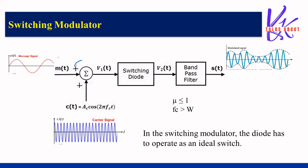This is the block diagram of the switching modulator. We are using a summer to which we are giving the message signal, which is a low frequency signal, and the carrier as the other input. The output of the summer is represented as v1(t), which is passed through a switching diode — a non-linear device. The output v2(t) contains some unwanted signals, so we use a band pass filter to remove the unwanted signals and give only the desired signal.